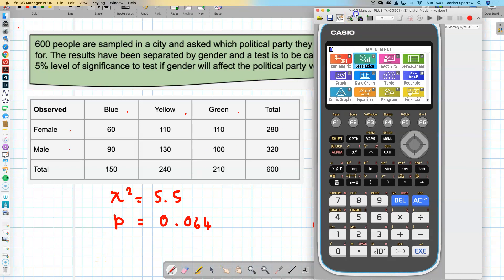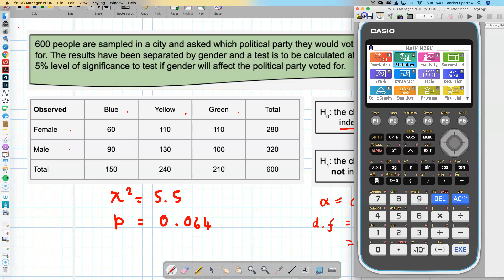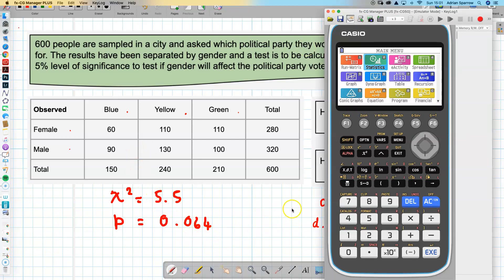In a previous video we looked at the chi-squared test and we've already done a chi-squared test and got all these values from my calculator. I want to look a little bit more about exactly how you get this number 5.5 without just using a calculator, and also how the observed and the expected table link together.